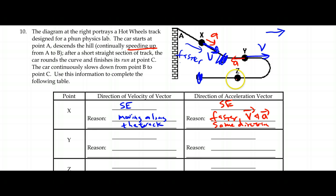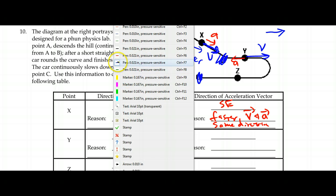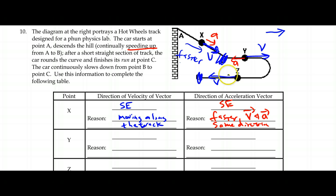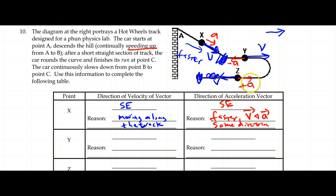We go around the curve and when we get to point Z, we're going to be moving to the left, following the track — though the arrow should be drawn smaller because it's slowed down from point Y. To slow down, the acceleration has to be opposite to that. Notice: at Z we had a leftward — what most people would call a negative — acceleration and we were slowing down. Earlier we had a rightward, positive, acceleration and we were also slowing down. So it's not the plus or minus of the acceleration that matters.